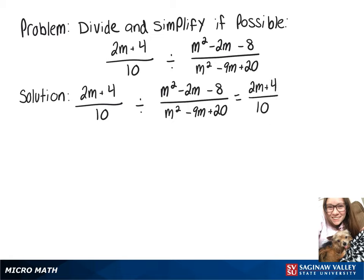So we'll have 2m plus 4 over 10 times m squared minus 9m plus 20 over m squared minus 2m minus 8.